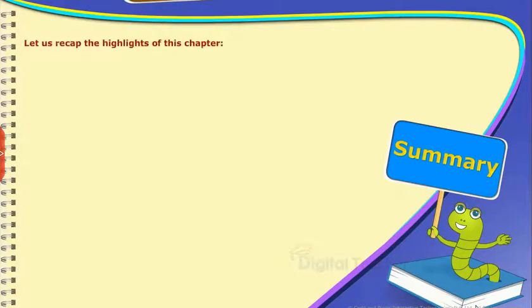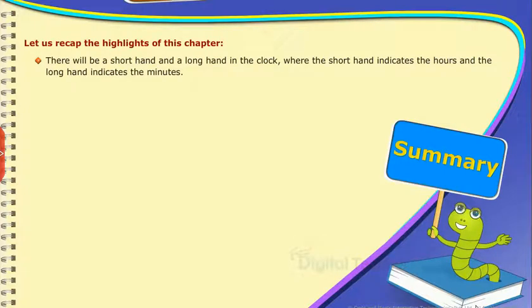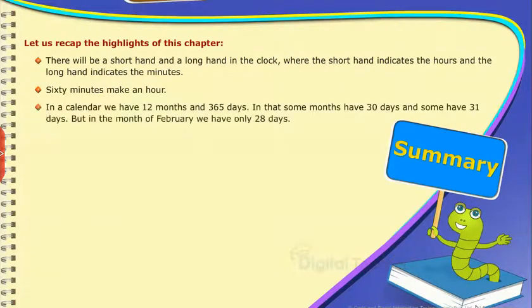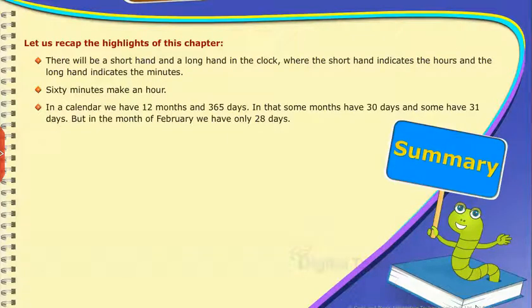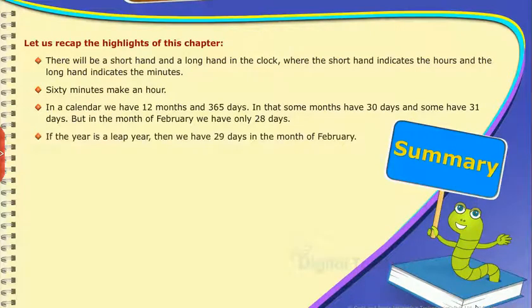Summary: Let us recap the highlights of this chapter. There is a short hand and a long hand in the clock; the short hand indicates the hours and the long hand indicates the minutes. 60 minutes make an hour. In a calendar, we have 12 months and 365 days. Some months have 30 days and some have 31 days, but February has only 28 days. If the year is a leap year, then February has 29 days. Leap year comes after every 4 years.